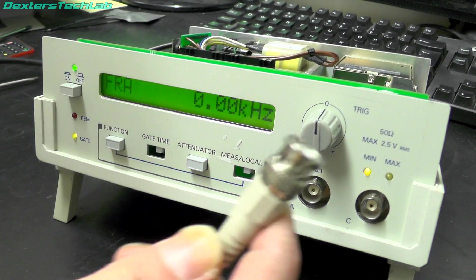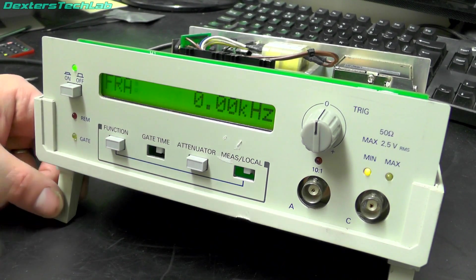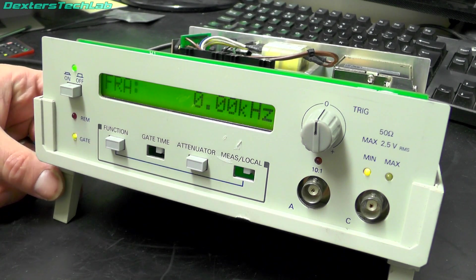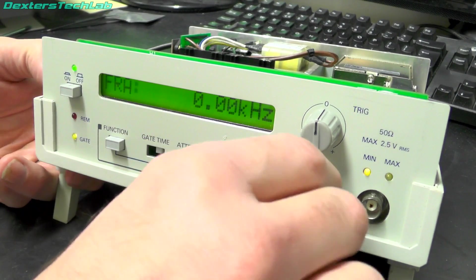So if I just plug in a signal here. I've just got a 10 megahertz coming out of my signal generator, which also has an oven oscillator in. And it has been calibrated against the Droitwich longwave transmitter. So it should be pretty accurate. Let's see what we get.